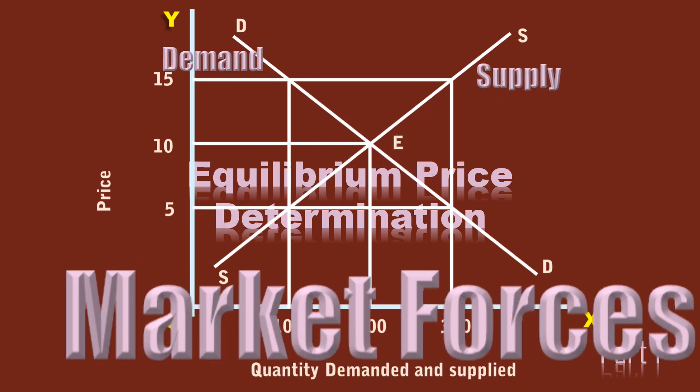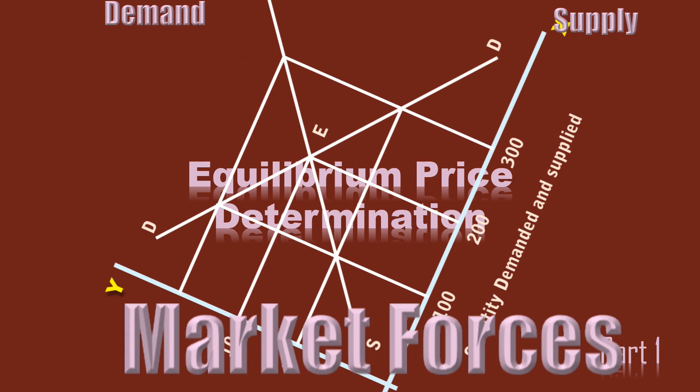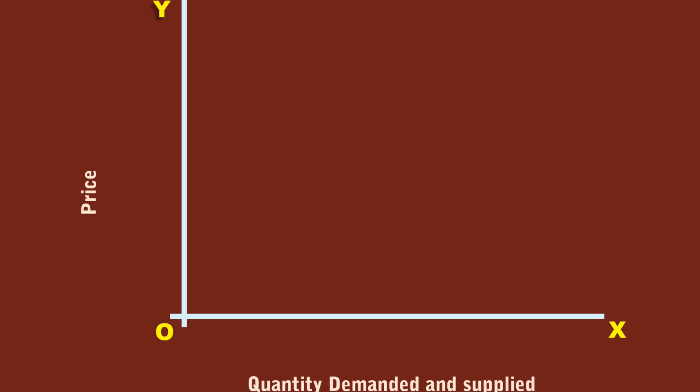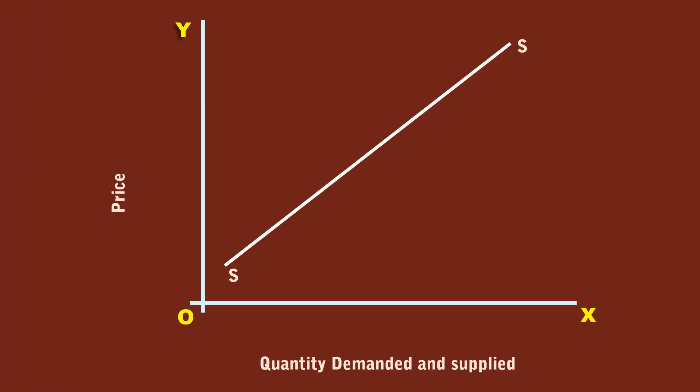The producers or sellers are the creators of supply. S-S is the supply curve. It slopes upward from left to right. It means they want to supply less at a lower price. At Rs. 5 they want to sell only 100 units.